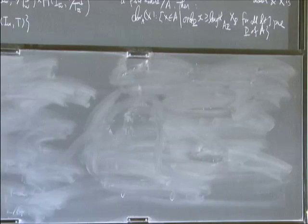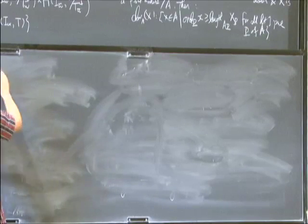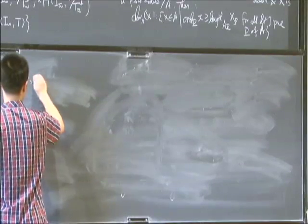The Iwasawa module for Selmer group is defined, we denote it as X, as the inverse limit of the Selmer groups of K_n. We take the limit of the Selmer groups and then take the Pontryagin dual here.